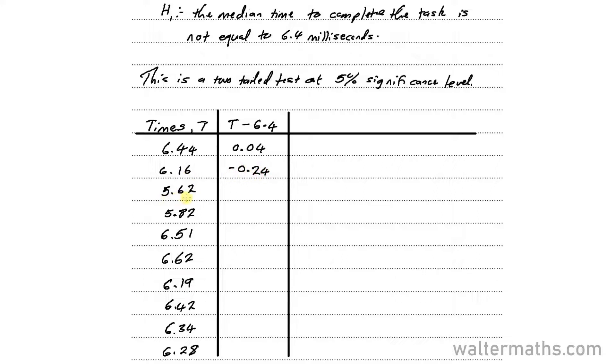5.62 minus 6.4, that's minus 0.78. So we do the same for all the entries. So here we'll be having minus 0.58, 0.11, 0.22, minus 0.21, 0.02, minus 0.06, and minus 0.12. So these are the differences.